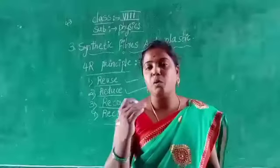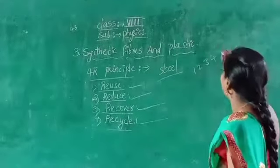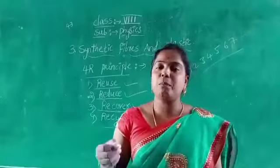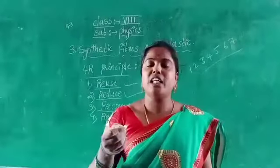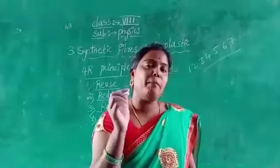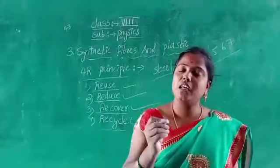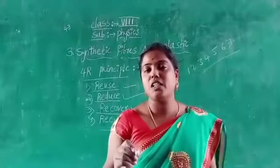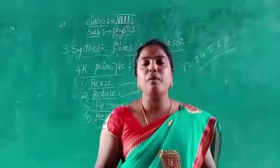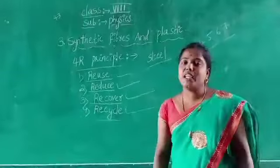We are using water bottles that have numbers on them — 1, 2, 3, 4, 5, 6, 7 — at the bottom of the bottle. This indicates recycled plastic. If a number is present at the bottom of the water bottle, that means it is recycled plastic and it does not cause harm to us. If we follow some rules — reuse, reduce, recover, and recycle — we can control the usage of plastic.